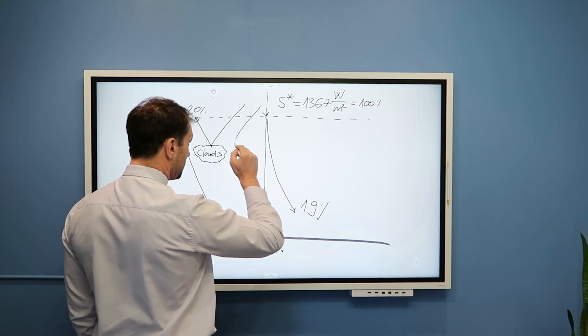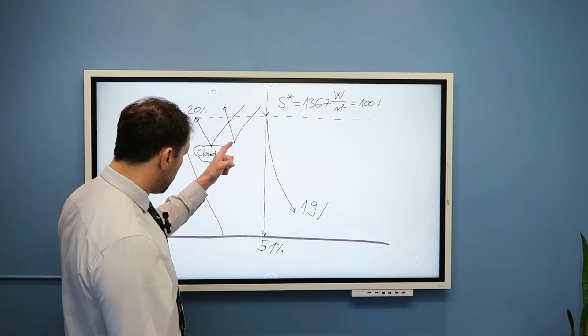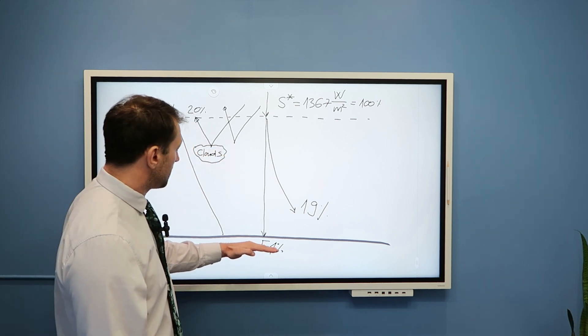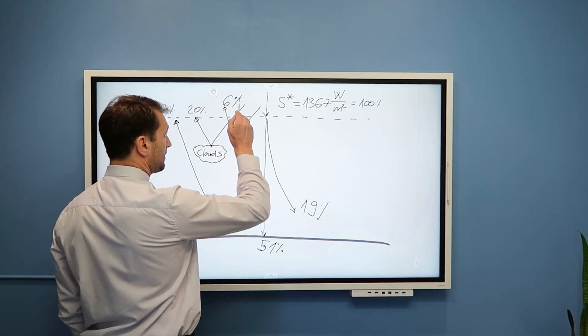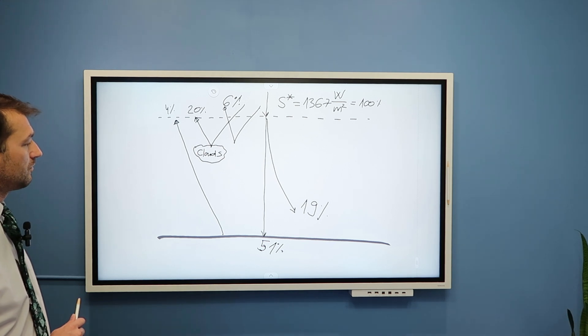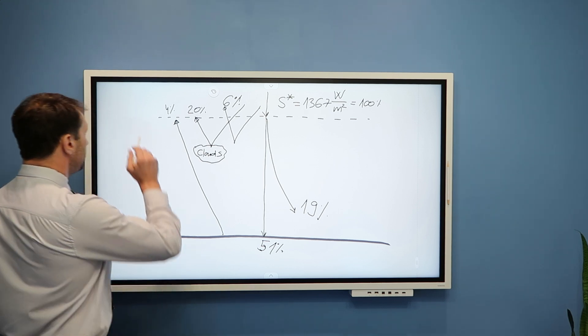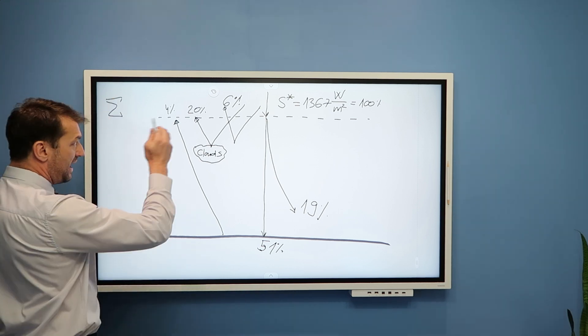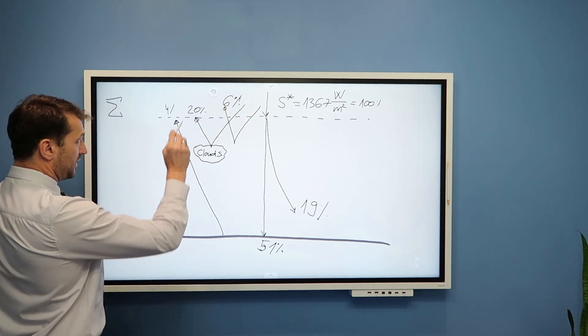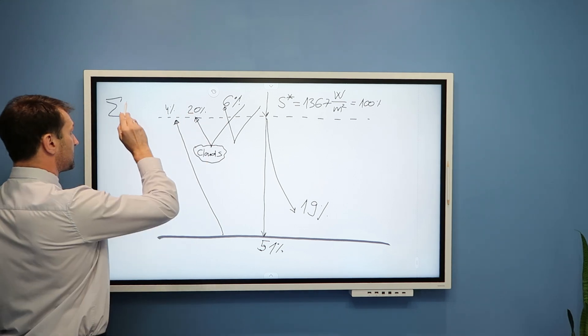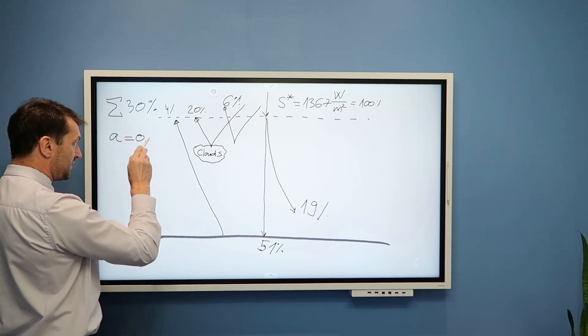And lastly, we have radiation that is back scattered from the atmosphere. Namely, these molecules and atoms that scatter radiation do not scatter it forward towards the surface, but back into the outer space. And this is approximately 6% of radiation. So, if we now carry out summation, we will see here that the sum of radiation that is being reflected back into the outer space is 20 plus 4 plus 6 is 30%. And this is albedo of our planet that we said is 0.3.